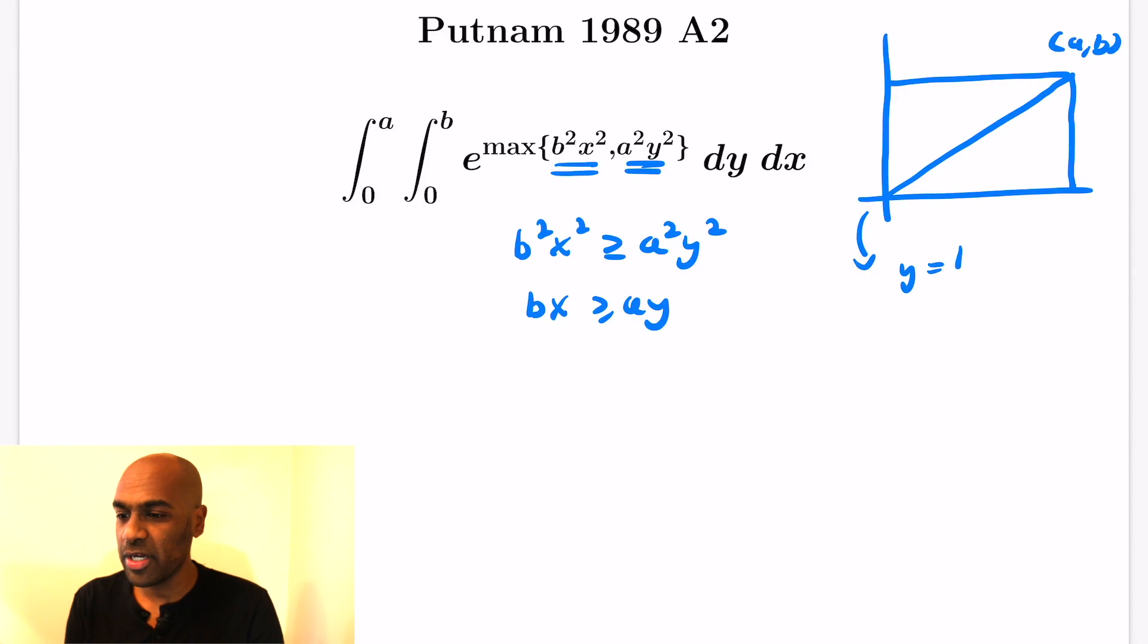It was given in the problem that a and b are actually positive numbers themselves. So let's split the region of integration by looking at this line that goes through the diagonal of the rectangle that is the region of integration. This line has the equation y equals b over ax.